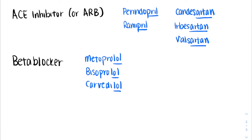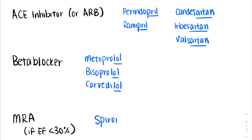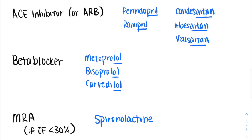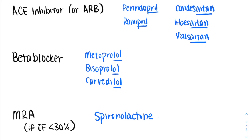Finally, if patients have an ejection fraction of less than 30%, they should also be on a mineralocorticoid receptor antagonist, and the most commonly used one is spironolactone. To medically optimize our heart failure patients, they should be on all three of these therapies at maximum doses. If they aren't on these therapies, we should think about why not — is it a contraindication like hyperkalemia? If they continue to have class 3 or 4 symptoms despite medical optimization, they should probably be referred to a cardiologist to consider other therapeutic options.